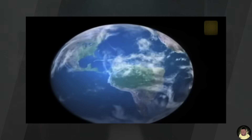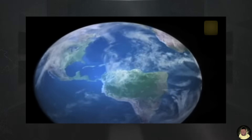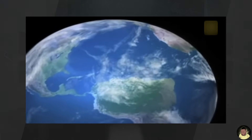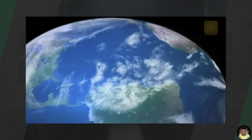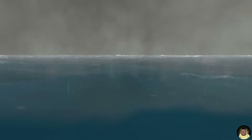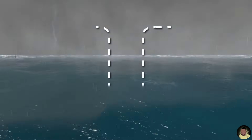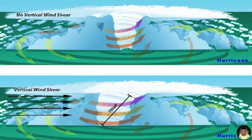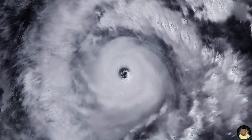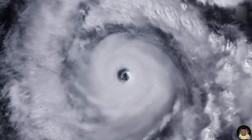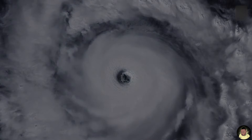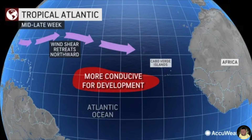Second, there must be sufficient atmospheric instability and deep convection so that warm, moist air near the surface can rise and form sustained thunderstorms. Third, low or no vertical wind shear is required, as low shear allows the storm's heat and vorticity core to remain vertically aligned and intensify. High shear, on the other hand, displaces convection and disrupts organization.